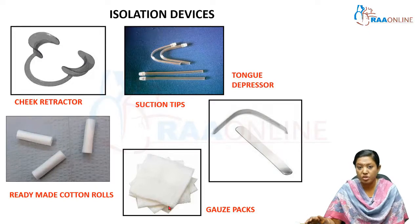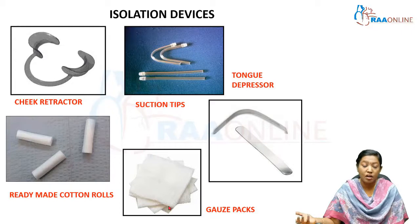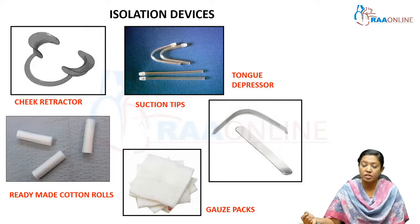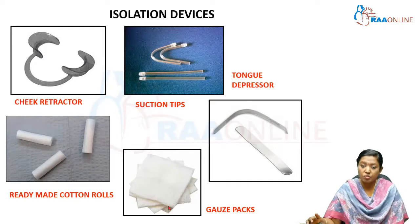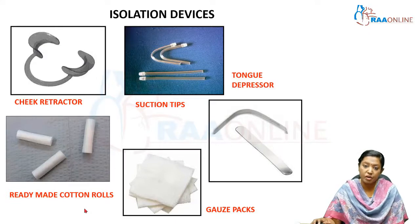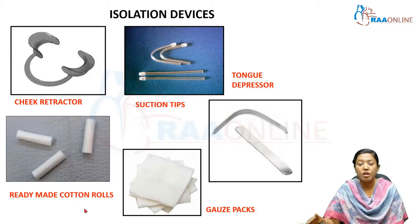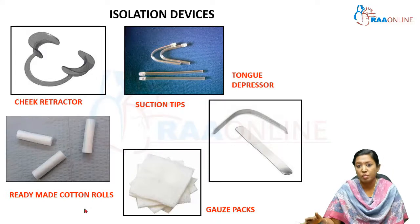Gauze packs can also be used as a throat shield to prevent aspiration of small materials when rubber dam isolation is not possible, for example when working with small files or K-files. Prefabricated cotton rolls are placed in the upper buccal vestibule to block the parotid gland duct, in the lower buccal vestibule, and in the lower lingual vestibule to block the submandibular duct.